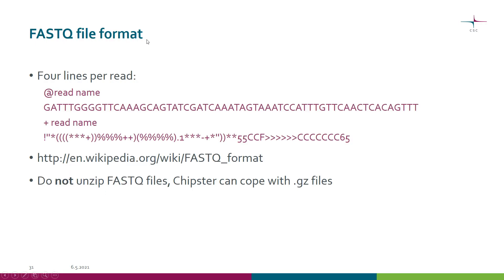Let's look at the FASTQ file format. When you get your reads, they typically come in a FASTQ file which is zipped. It's important to note that you should not unzip the FASTQ files, as Chipster can cope with the compressed format. In the file there are always four lines per read: the actual read sequence, a line starting with an at-sign giving the read name, a third line where the name can be repeated or there is just a plus sign, and then the fourth line which is the actual quality information.